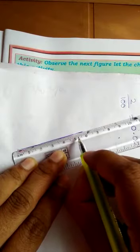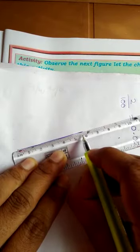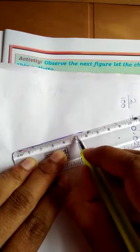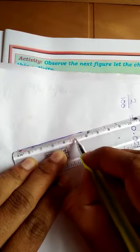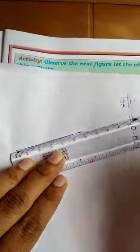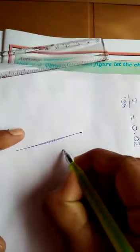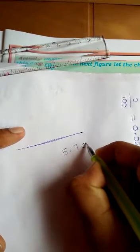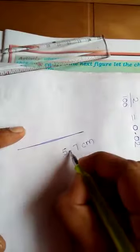After 5: 1, 2, 3, 4, 5, 6, 7 divisions is there. Less than 6, therefore length is greater than 5 centimeter and 7 small divisions. Its length can be written as 5.7 centimeter. Read it as 5.7 centimeter. Now I draw another line.